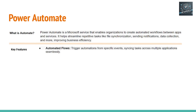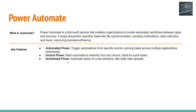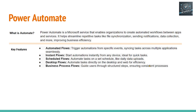What are the major key features? Automated flows that can be triggered by a specific event. Instant flows that start autonomously. Scheduled flows — if you want to schedule it in the evening or on the weekend, you can specify a date and time. And desktop flows, which automate tasks directly on the desktop and web for efficiency. And business process flows that guide users through structured steps ensuring consistent processes.